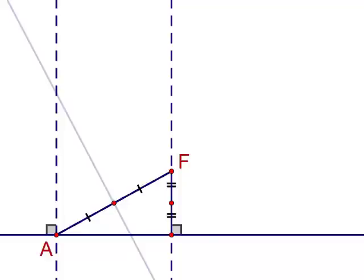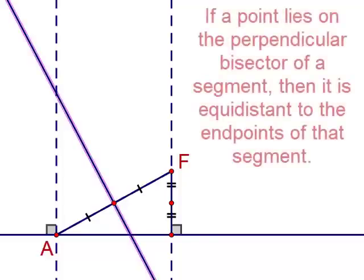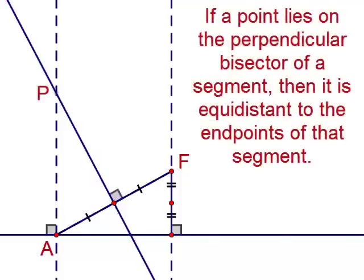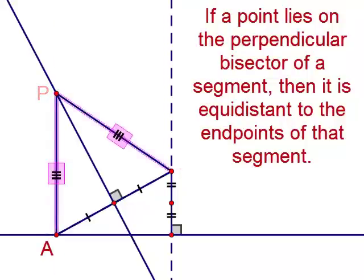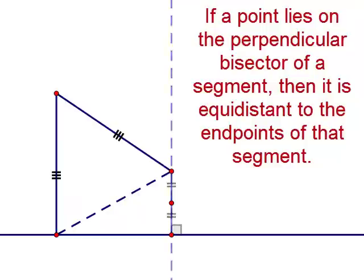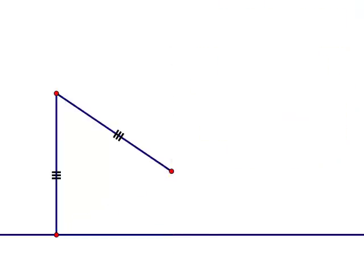Then construct the perpendicular bisector of segment AF, where it intersects my perpendicular line on the left. I will call that point P, and using our equidistance ideas, that if a point is on the perpendicular bisector of a segment, it will be equidistant to the endpoints of that segment.